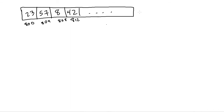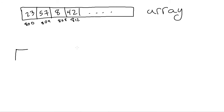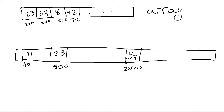With a linked list, items are not stored in order at all. The first item might still be at location 800, but the next item — say 57 — is not stored directly after 23. It could be at memory location 2200. Then the 8 could be at address 408, and the 42 somewhere like 1808. These memory addresses are totally arbitrary — this is just to illustrate the concept.